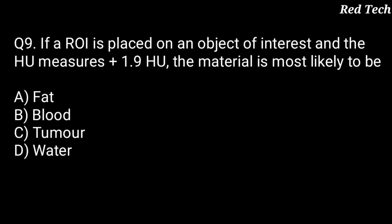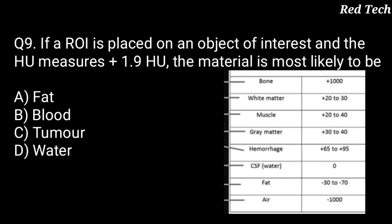Question number 9: if a ROI is placed on an object of interest and the HU measures plus 1.9 Hounsfield units, the material is most likely — option A is fat, option B is blood, option C is tumor, option D is water. As we know, HU values vary in CT: minus 1000 for air, plus 1000 for bone, and zero for water. Since plus 1.9 is closest to zero, the right answer is water.